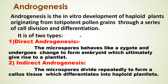Androgenesis is the in vitro development of a haploid plant originated from totipotent pollen grains through a series of cell division and differentiation. It is of two types: direct androgenesis, where the microspore behaves like a zygote and undergoes changes to form an embryo which ultimately gives rise to a plantlet; and indirect androgenesis, where the microspore divides repeatedly to form a callus tissue which differentiates into haploid plantlets.